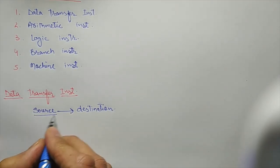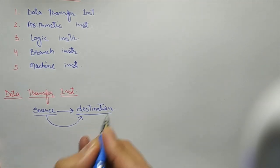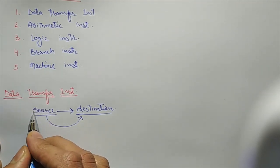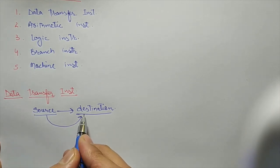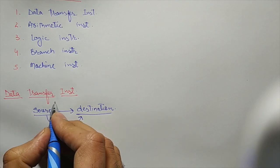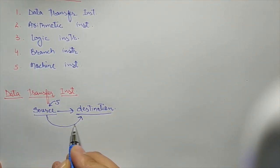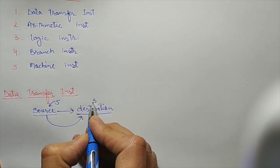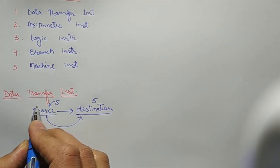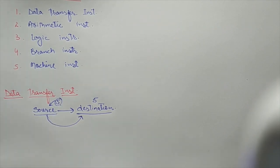We have to take data from the source and place that data into the destination. Keep in mind that when we are moving data from source to destination, the source will remain as it is. For example, if the source contains five, after moving data to the destination, the destination will contain five and the source will still contain five.